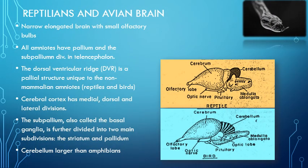Welcome to this lecture on comparative account of brain in vertebrates, part 3. In this lecture, we will first see the basic layout of the amniote brain. Amniotes include reptiles, birds, and mammals.